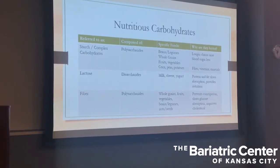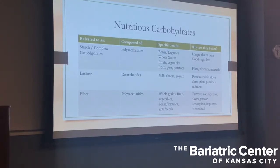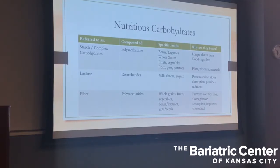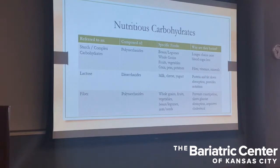Here's a quick summary of the more nutritious carbohydrates — ones you don't necessarily want to cut out of your diet. Starch are complex carbohydrates composed of polysaccharides, found in beans, legumes, whole grains, fruits, vegetables, corn, peas, and potatoes. They're better because the longer chains are less likely to spike your blood sugar — it takes longer to break them down, and they're also rich in fiber, vitamins, and minerals. Lactose is a disaccharide in milk, cheese, and yogurt; the protein and fat slow its absorption and provide more nutrition. Fiber is also a polysaccharide found in whole grains, fruits, vegetables, beans, legumes, nuts, and seeds — it helps prevent constipation, slows glucose absorption, and improves cholesterol levels.